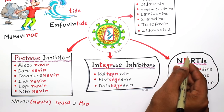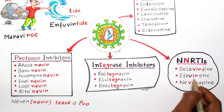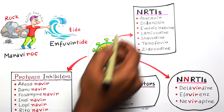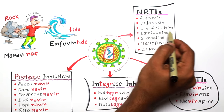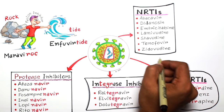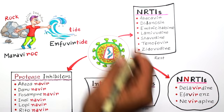Now we come to non-nucleoside or nucleotide reverse transcriptase inhibitors. The portion 'vir' is common for all of them, but this portion must appear in the middle of the name, not at the end — and fusion inhibitors are the exceptions. The rest of the drugs are included in nucleoside reverse transcriptase inhibitors; you don't have to remember them separately.